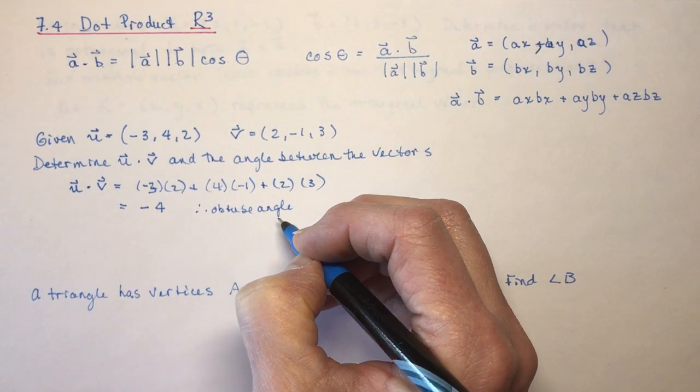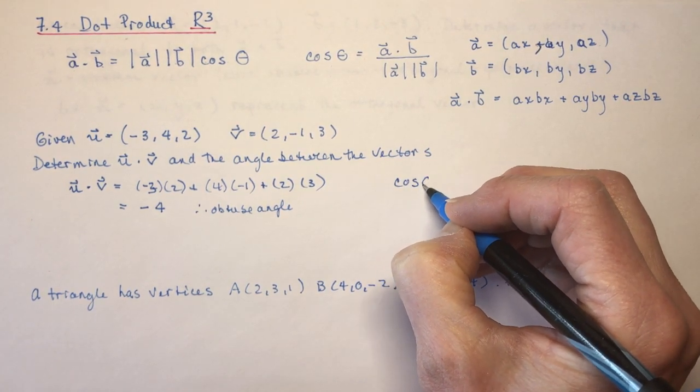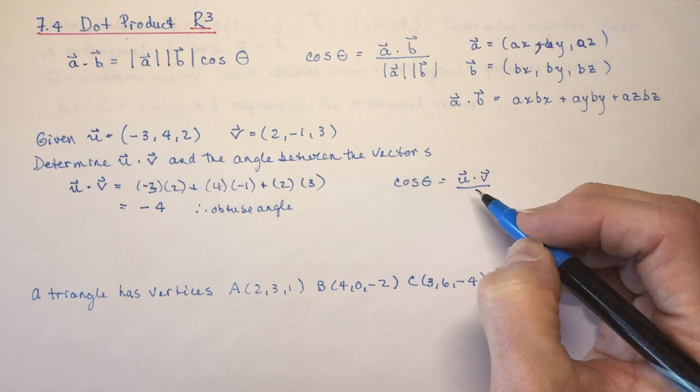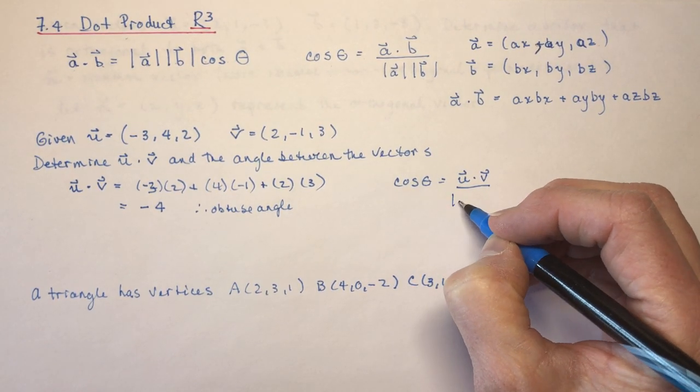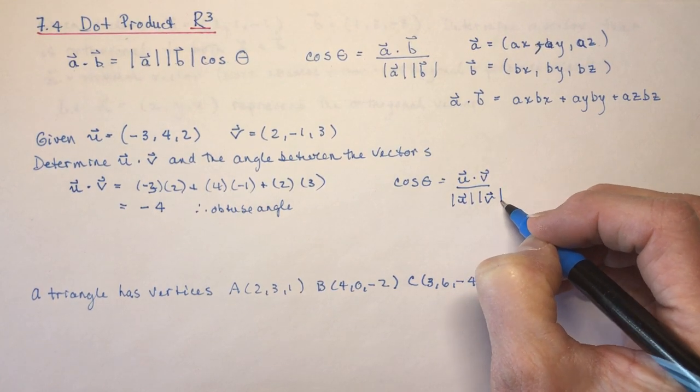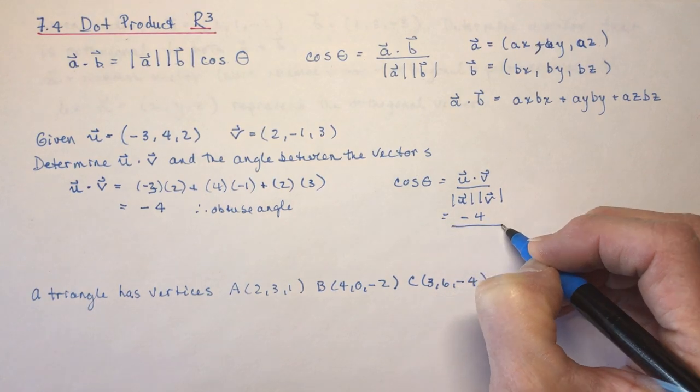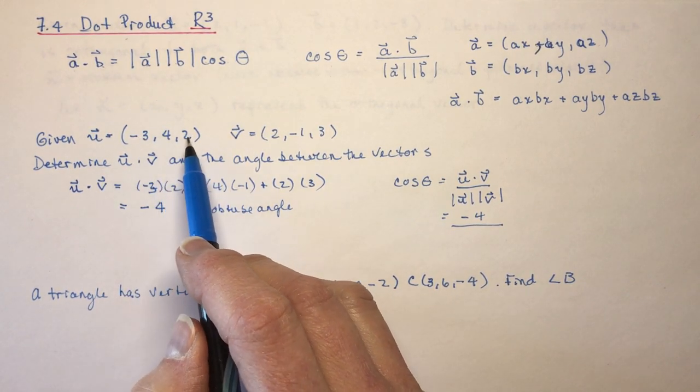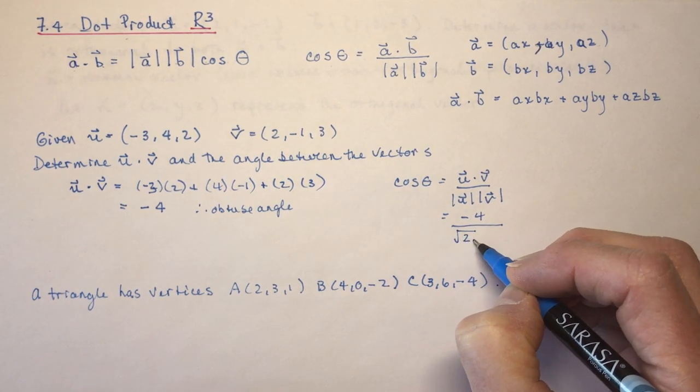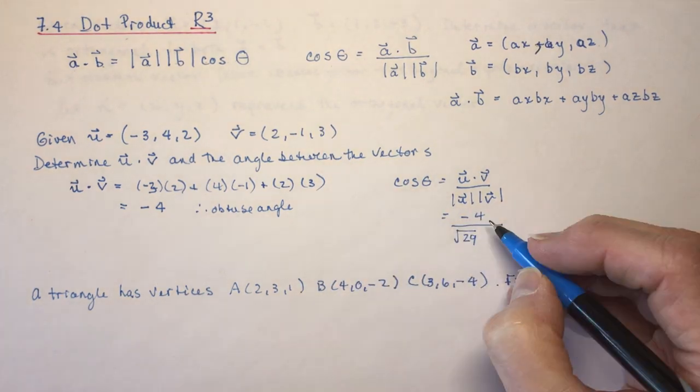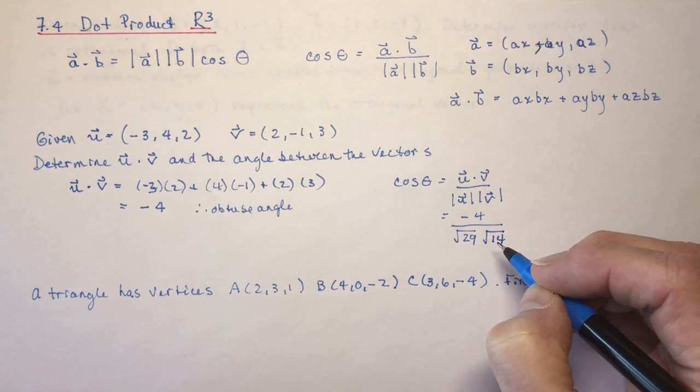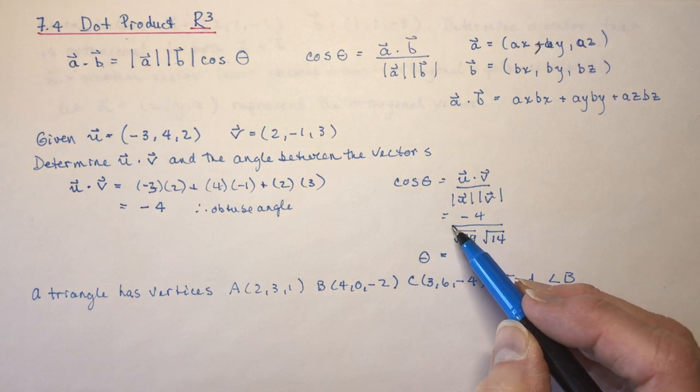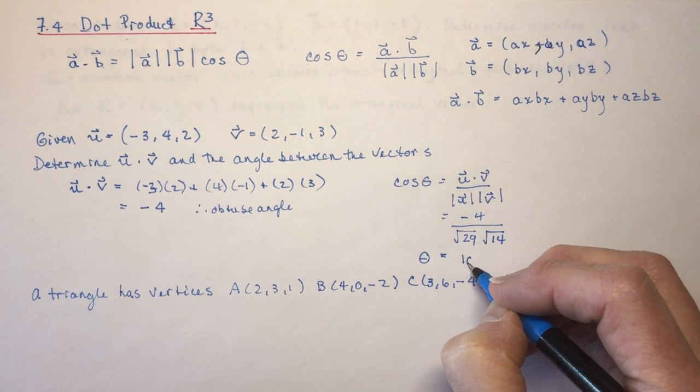And you'll see that when we do the angle calculation. So cos theta here is going to be u dot v, which we know is negative 4. And if cos is negative, it means you have to be in the second quadrant. So over the magnitude of u times magnitude of v. And the magnitude, remember to find magnitude, you just square these and add them all together. So I have 9 and 16 is 25, and 4 is 29, and the square root of that. And this one is 4 plus 1 is 5, plus 9 is 14.